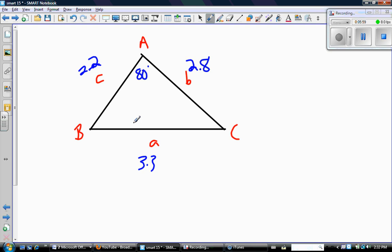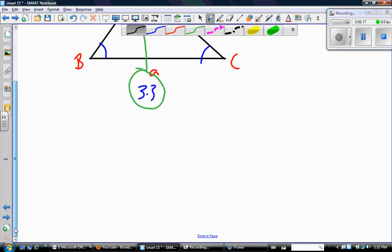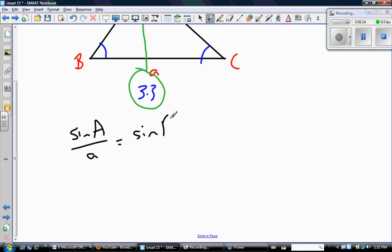So what can I do now to find the measure of angle B and the measure of angle C? Well, now that I've calculated from Part A, I now have an angle and its opposite side, so I have one partnership here, and that means I can now use the sine law. So sine A over side a is sine B over side b, and that's sine C over side c. And so we'll take this portion first and let's solve.